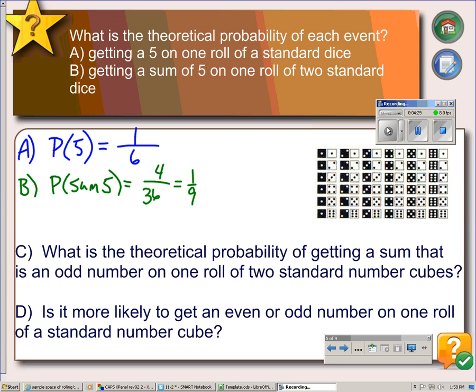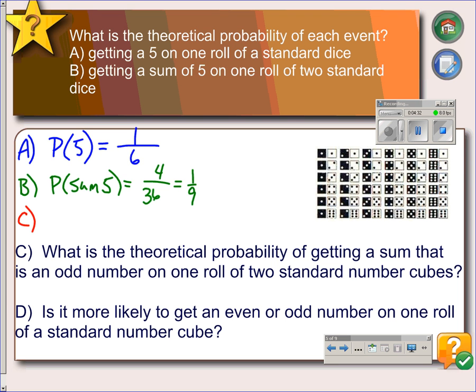Part C says: what is the theoretical probability of getting a sum that is an odd number on one roll of 2 standard number cubes? So we're looking at our picture over here again, looking for the probability that the sum is odd.